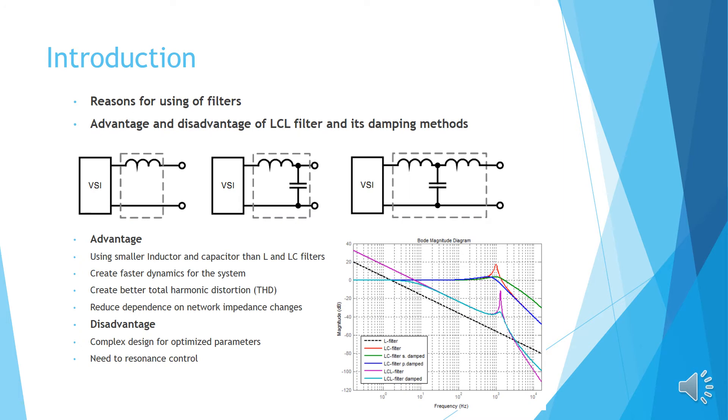Introduction. Reasons for using of filters. The decrease of current harmonic around the switching frequency is an important requirement for VSI connected to the network. For this reason, passive filters are used, including L-filter, L-C-filter and L-CL filters.